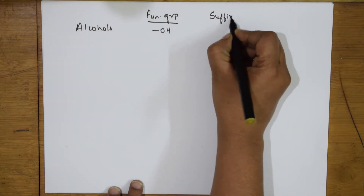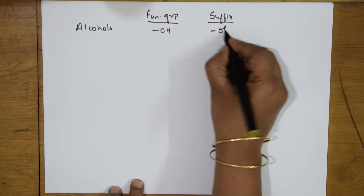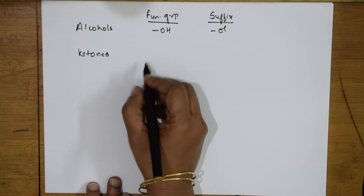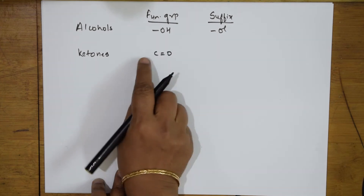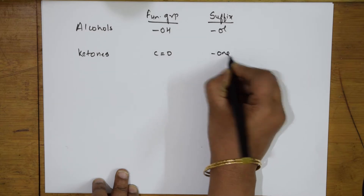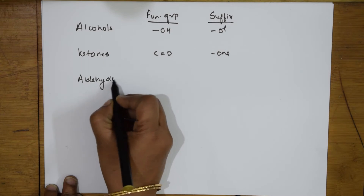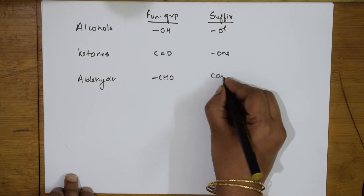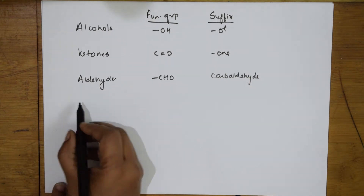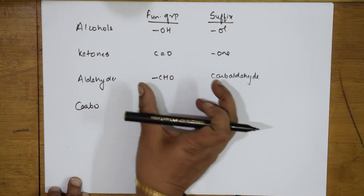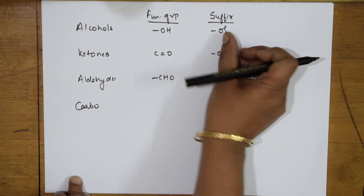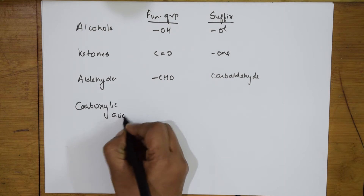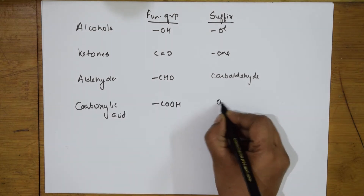Suppose if I have aldehyde in the given structure — the functional group present is CHO. The suffix given is 'carbaldehyde' or 'aldehyde'. Suppose if you have carboxylic acid — it is COOH — you need to end with 'oic acid'. If you have acid halides, represented as COX — you take out OH from COOH and replace with X. We name this as 'carbonyl halide'. Here X can be any halogen: fluorine, chlorine, bromine, or iodine.